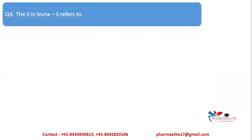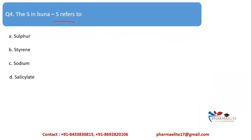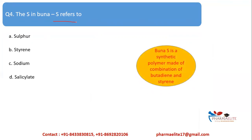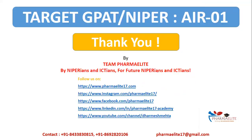Question 4: The 'S' in Buna-S refers to — sulfur, styrene, sodium, or salicylate? Buna-S is a copolymer of butadiene and styrene, so the 'S' stands for styrene. In Buna-N, it was acrylonitrile. Therefore option (b) styrene is correct. I hope you enjoyed the video — stay tuned for more.